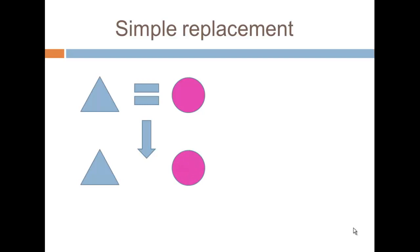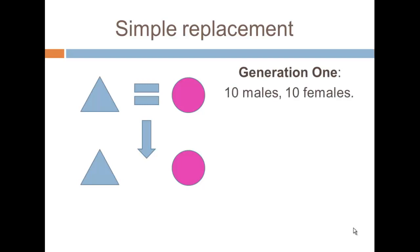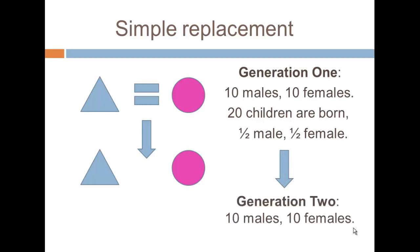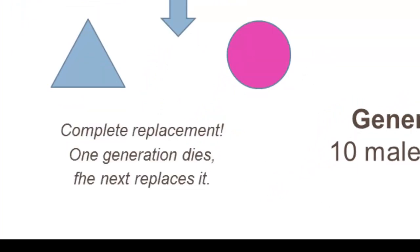In this scenario there is no population growth. In generation one we have 10 males and 10 females. A total of 20 children are born, so each female averages two children who survive to adulthood — half male and half female — and this means the next generation looks just like the one above it. As we follow through the generations, there is no population growth.